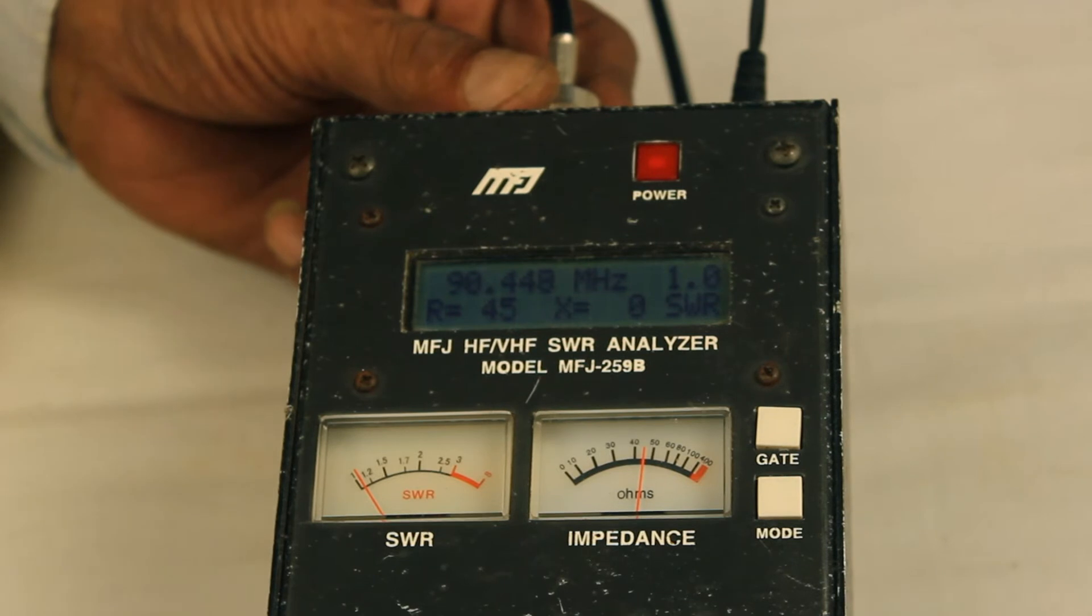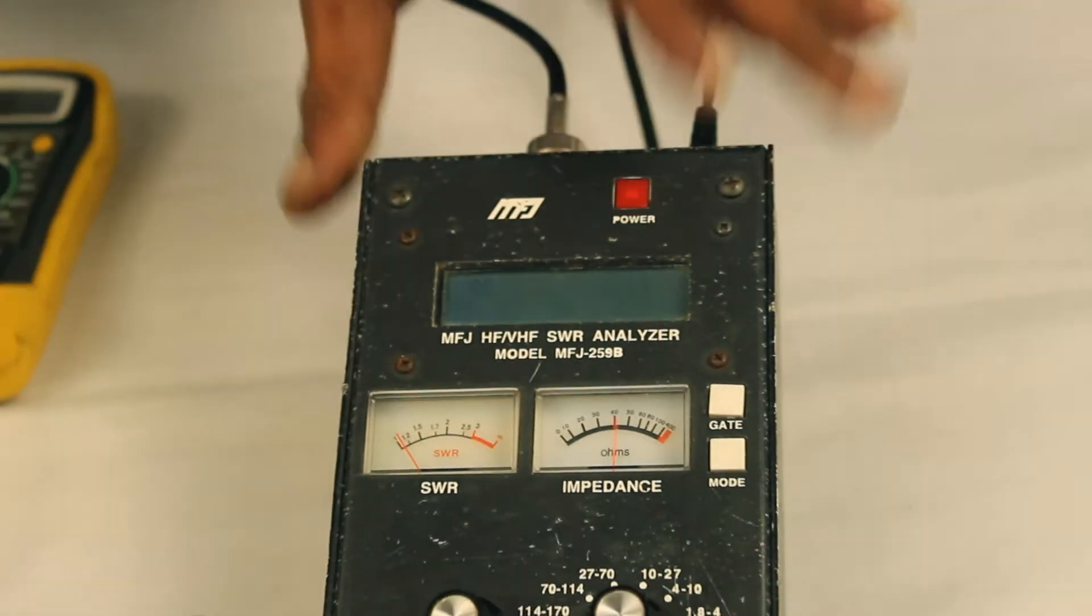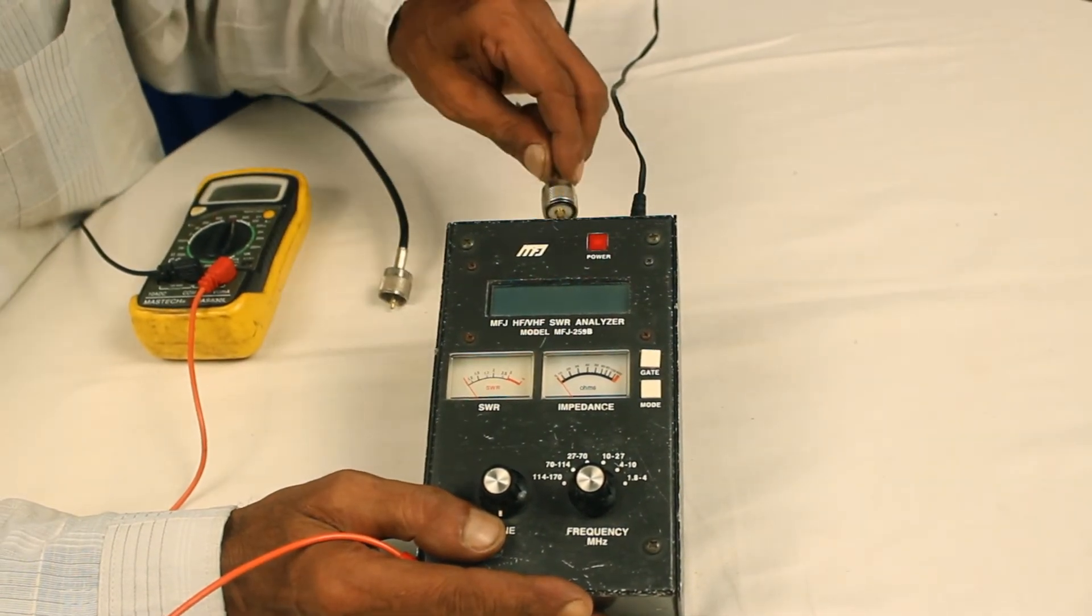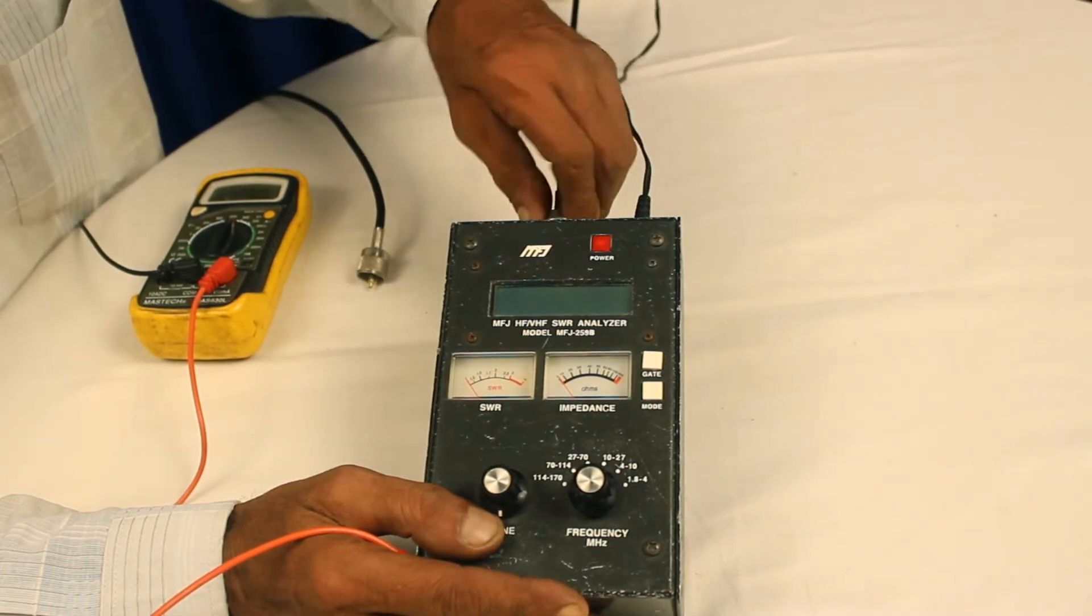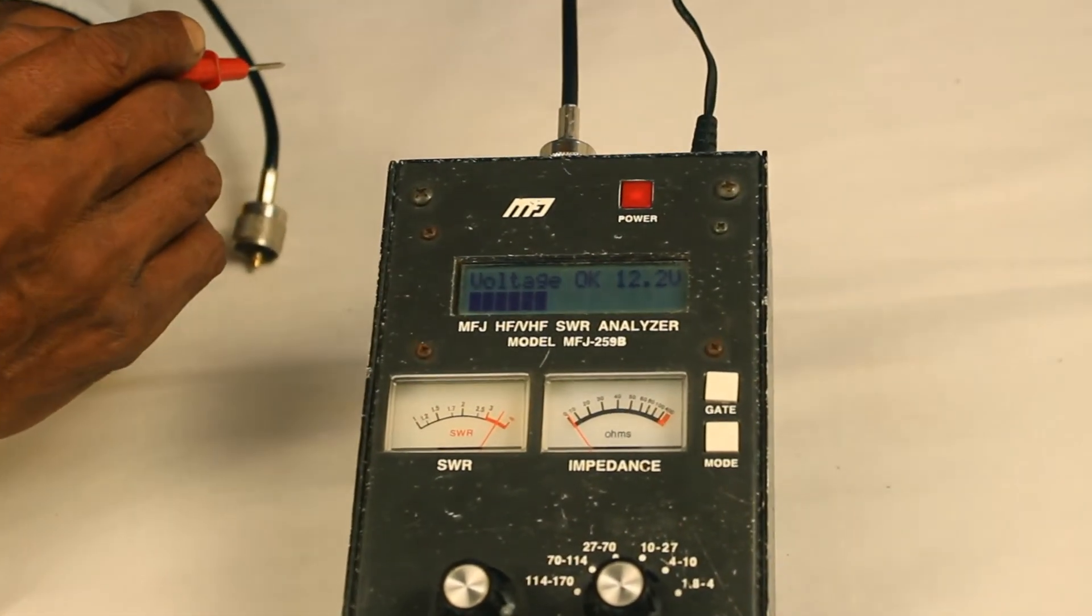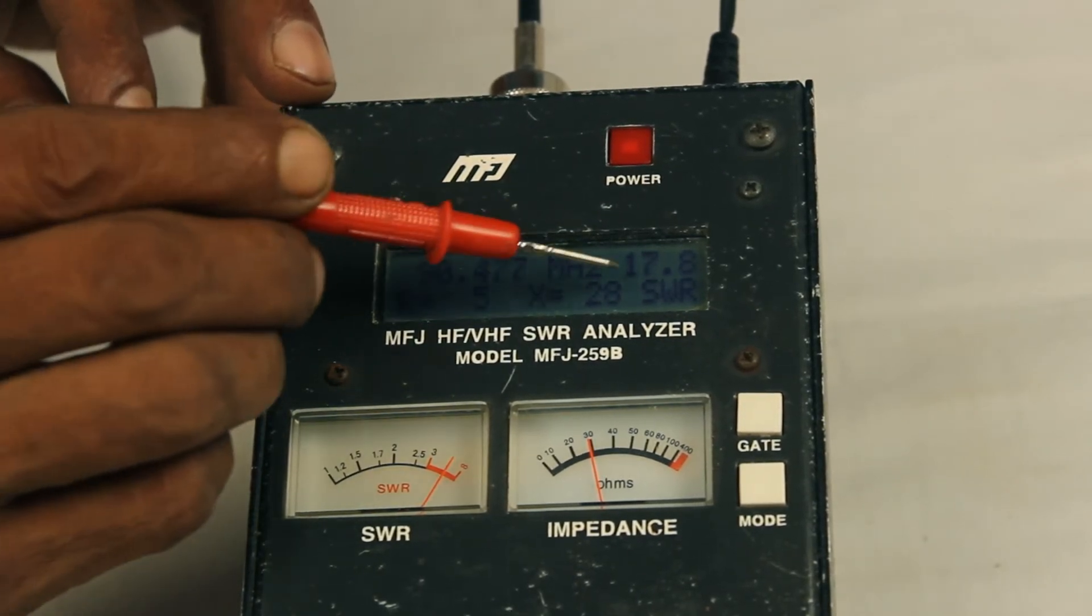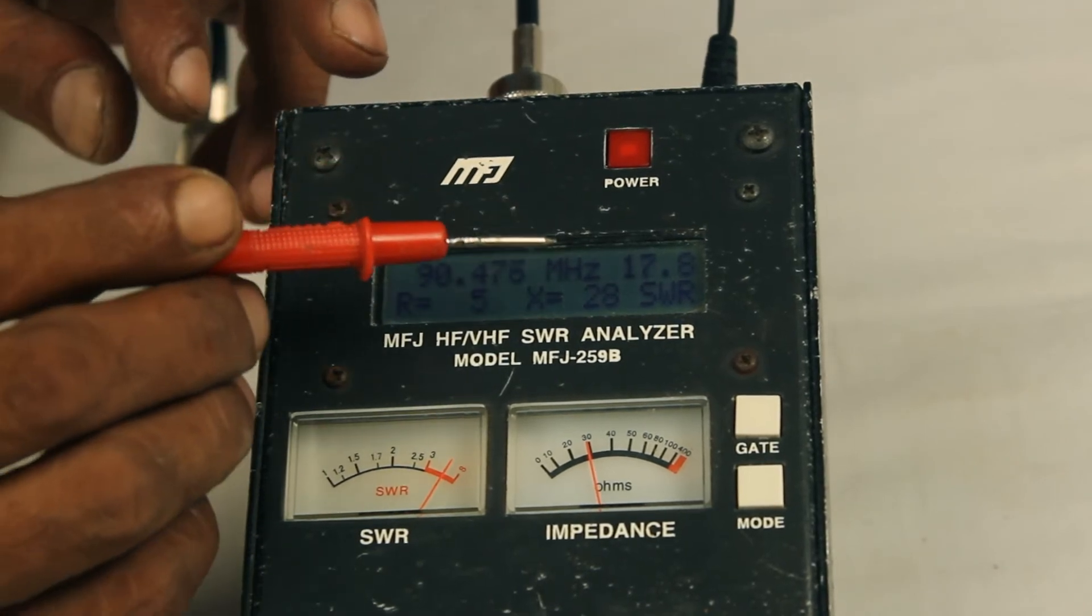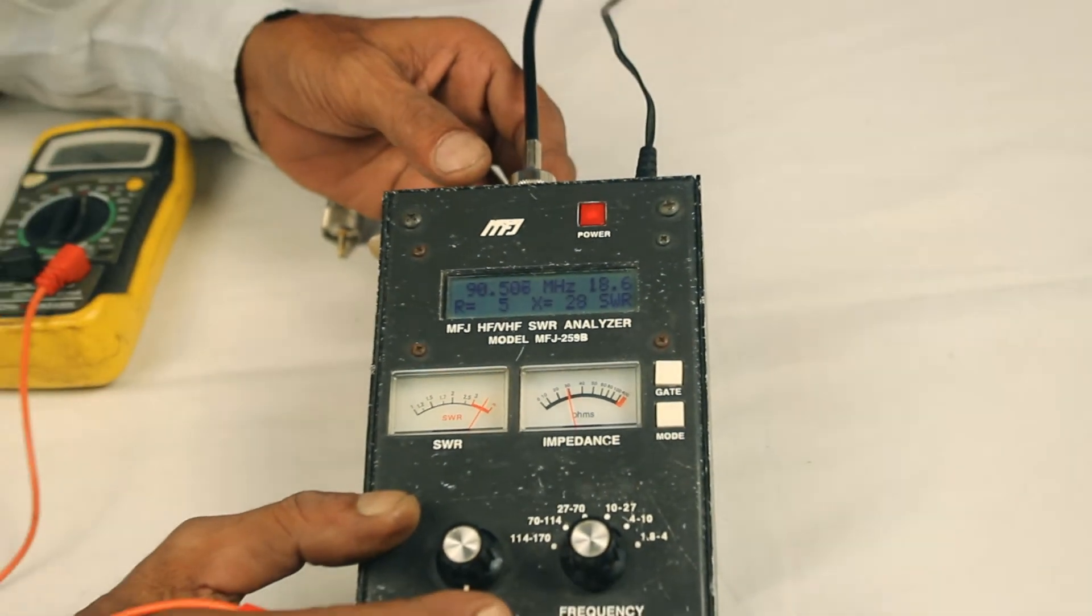Now, I am going to switch off the system and connect a very badly tuned antenna to it. As you can see, transmission frequency remains constant at 90.4 but SWR has shot up to 17.8, 17.6 which indicates there is something seriously wrong with the antenna.